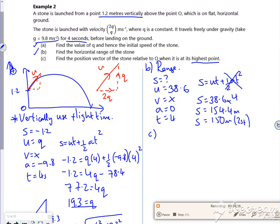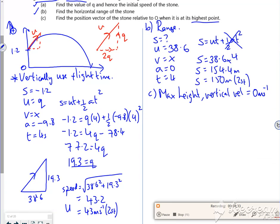So max height, we know that the vertical velocity is 0. So I'll write that down before I stop. Max height, vertical velocity is 0. There, 30 seconds left for that one, so I'll stop that now.